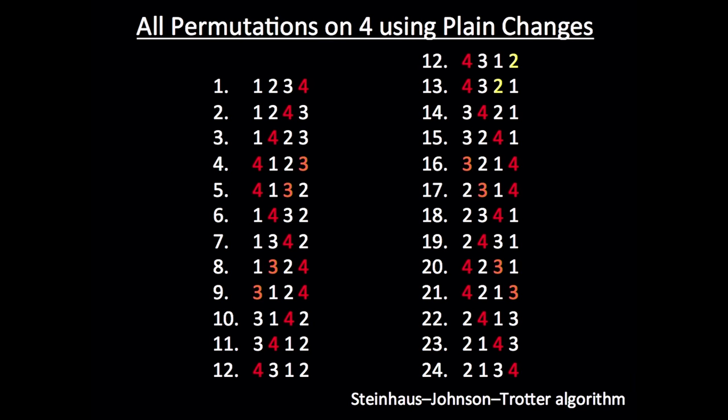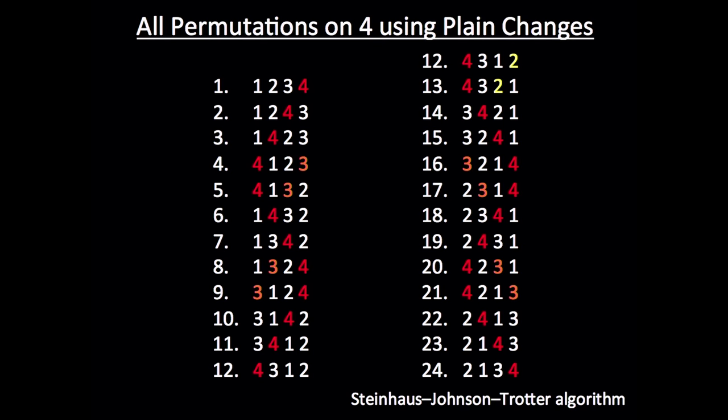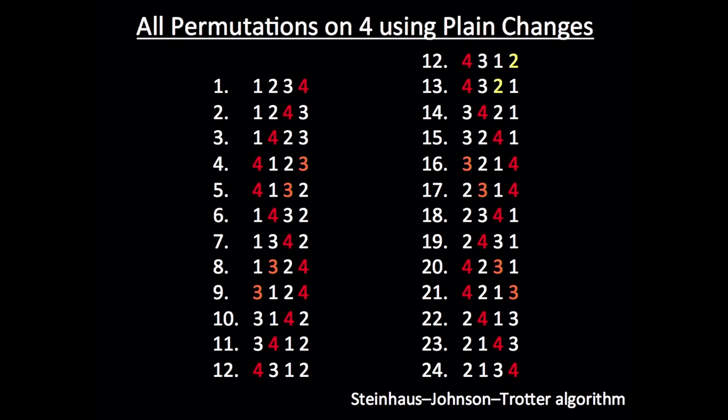Now I want you to notice two particular things about this sequence. First of all, if you look at that last change at row 24, two one three four, you'll see that if we make one more plain change we get back to one two three four, we get back to rounds. So this cycle essentially closes in on itself.